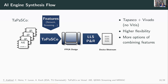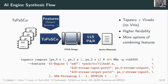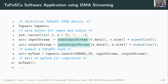We believe this gives you much higher flexibility in your design and more options for combining the different features of the Versal platform. If you want to use the DMA streaming feature of Tapasco, your host software looks almost the same. Instead of the make_wrapped_pointer call, you now use make_input and make_output stream calls, and Tapasco will handle your data streams automatically.